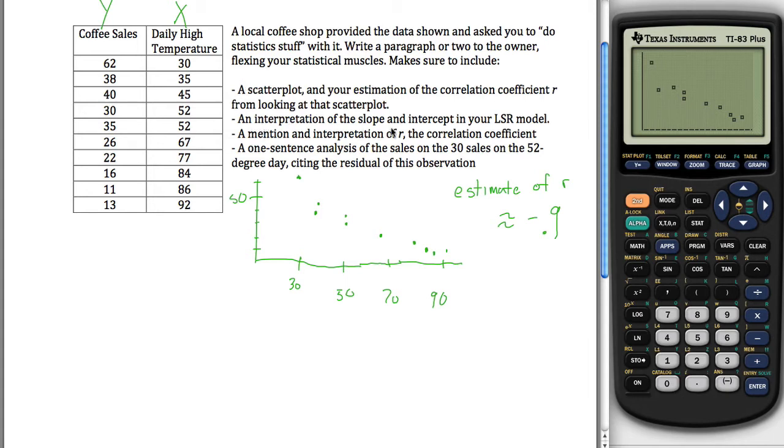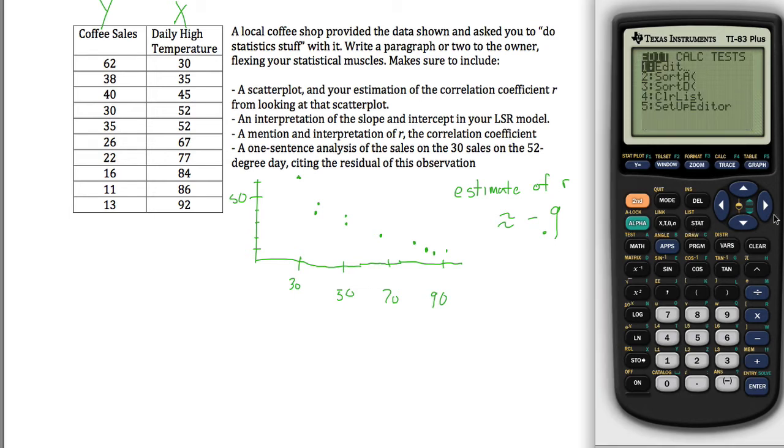The second one says, an interpretation of the slope and intercept in your LSR model. What that's saying is do linear regression, go over to calculate, go down to linear regression, and then tell it your x variables are in L2 and your y variables are in L1, if those are where yours are. X variables, y variables. Hit enter, it'll spit out all sorts of stuff.